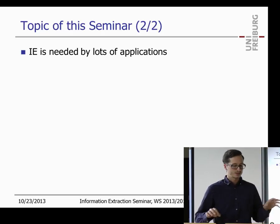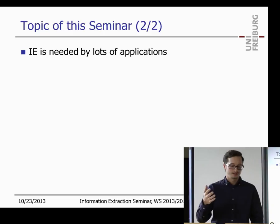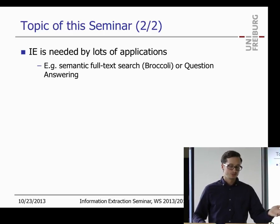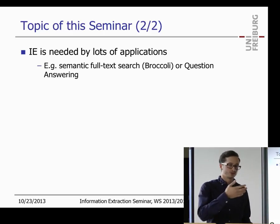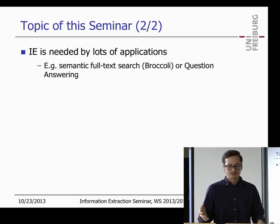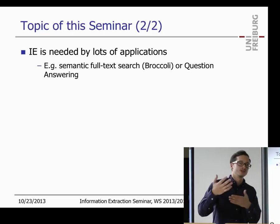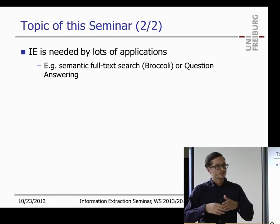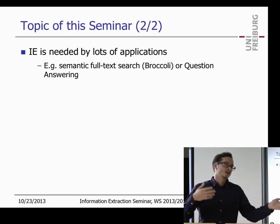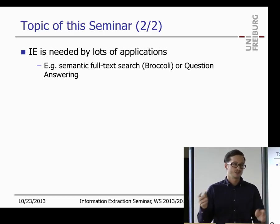There are obviously many applications that need extracted information. We already saw semantic full-text search — the Broccoli system really needs information extraction. There's also question answering: if you ask a system 'where was Albert Einstein born?' it will answer 'Albert Einstein was born in Germany.' This is also a place where information extraction is used heavily.